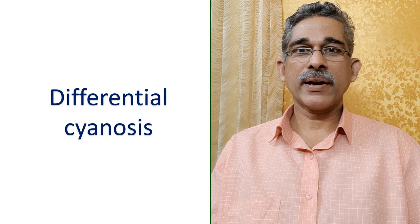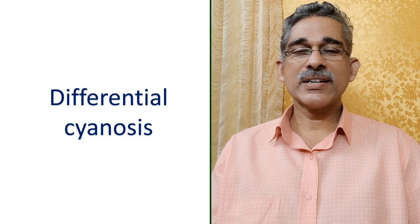In uniform central cyanosis, both upper and lower limbs are cyanosed as well as lips and tongue.